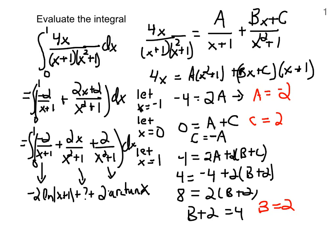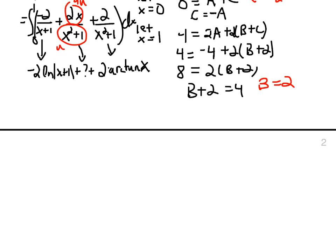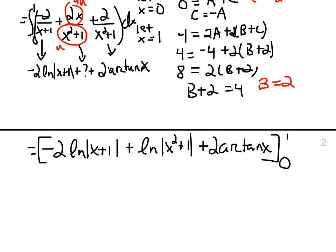But with the u substitution, we're able to get it. If we let u be the denominator, x squared plus 1, then du is 2x. That's convenient that it was a 2. So, we're looking at 1 over u du. So, it's a natural log of u. Let's go to another page. Negative 2, the natural log of x plus 1, plus the natural log of x squared plus 1, plus 2, the arc tangent of x. And all of this is evaluated from 0 to 1.